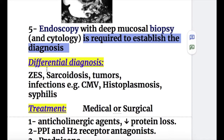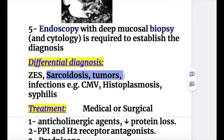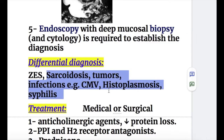Differential diagnosis includes Zollinger-Ellison syndrome, sarcoidosis, tumors, and infections such as CMV, histoplasmosis, and syphilis.